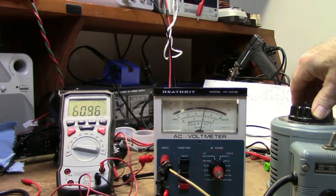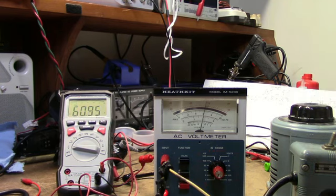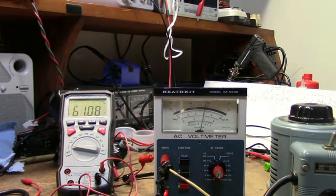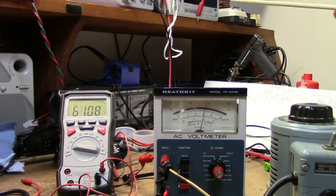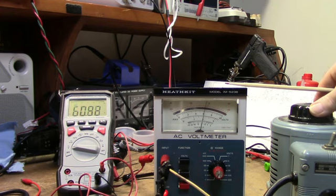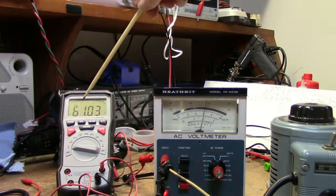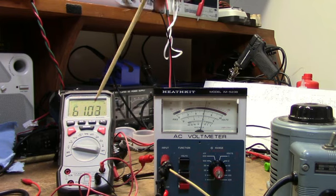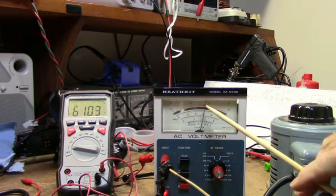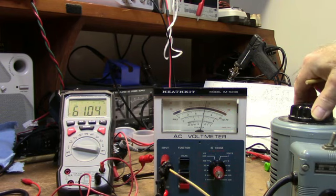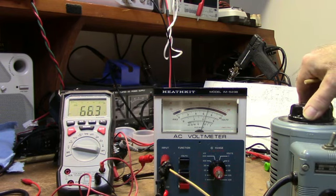I have a Variac connected through an isolation transformer to the input of the meter. I have the meter on the 10 volt range. I'm going to bring it up slow. There's 10 volts. I'm going to go up to the 30 volt range.